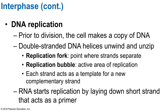Prior to division, the cell makes a copy of the DNA. The double-stranded DNA unwinds and unzips by an enzyme called DNA helicase. This takes place at a replication fork, where the strands separate, and the entire area where replication takes place is called the replication bubble. Each strand serves as a template for the new complementary strand, because we want an exact copy of the genetic material. DNA has complementary base pairs, so when you split the strands open, you make exact copies of the complement of each strand.